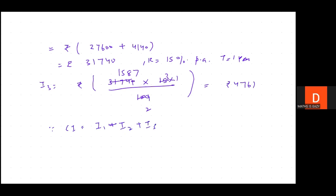Now we calculate total compound interest: Rs. 3,600 (first year) plus Rs. 4,140 (second year) plus Rs. 4,761 (third year) = Rs. 12,501. That is the total compound interest received from Mukesh.